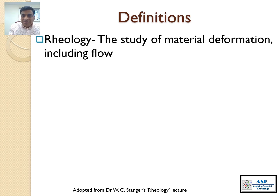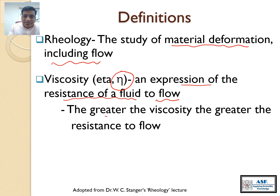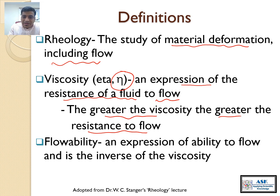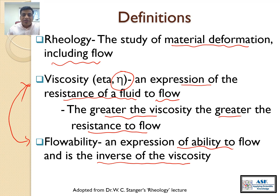Let's talk about basic definitions of rheology. Rheology is the study of material deformation, including flow — it is the science of flow. Second, viscosity, denoted with the letter eta, is an expression of resistance of a fluid to flow: the greater the viscosity, the greater the resistance to flow. Flowability is an expression of the ability to flow and is the inverse of viscosity. Most books just exchange these words without explaining why liquids have viscosity, and that's what we'll address.